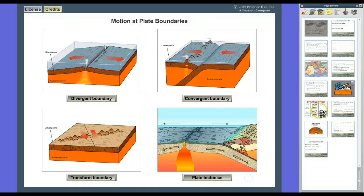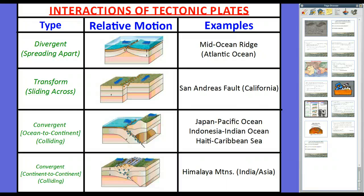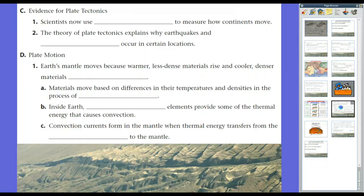Here's a summary of the interaction of tectonic plates. Divergent plates spread apart — the mid-ocean ridge in the Atlantic Ocean is a good example. Transform plates slide across each other, catching and causing earthquakes — the San Andreas Fault in California. Ocean-to-continent convergent plates collide, with the denser one slipping under, as seen in Japan and the Pacific, Indonesia and the Indian Ocean, and Haiti and the Caribbean. Continent-to-continent collisions form mountains — that's the Himalayas.